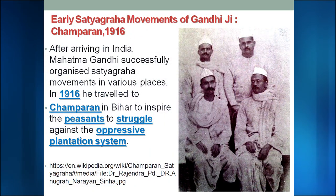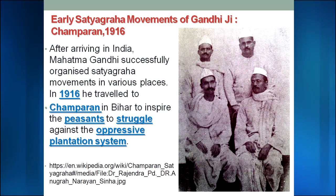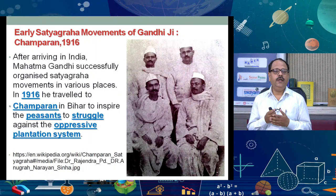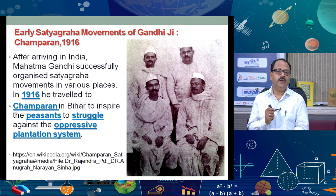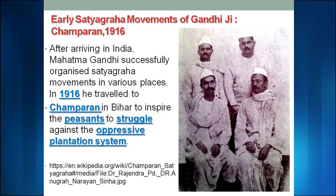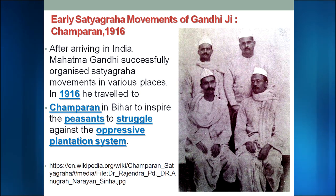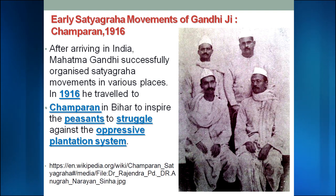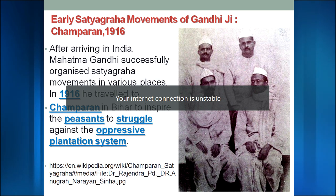When Gandhi Ji returned to India, he first spent one year traveling across India to understand the conditions of Indians. After that, he started three initial movements in India, all of which were very successful. The first and most popular was the Champaran Indigo Movement. Champaran, in North Bihar, had favorable geographical conditions for indigo production. The British made contracts with farmers there, giving them advances to grow indigo on their fields.